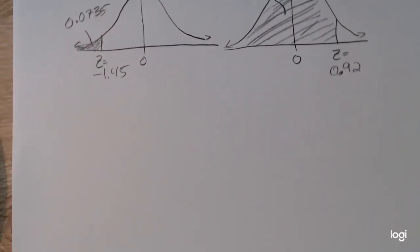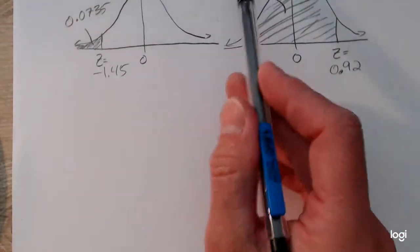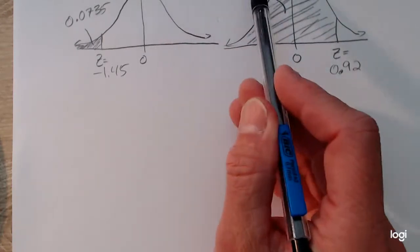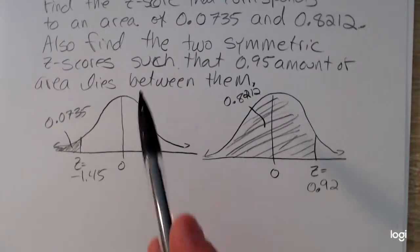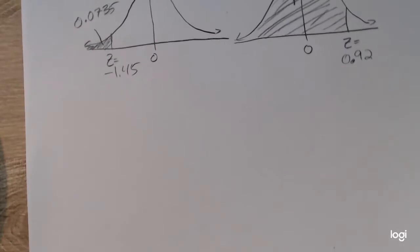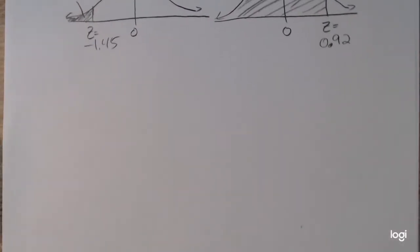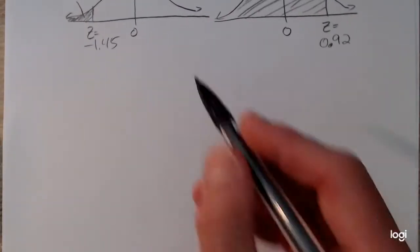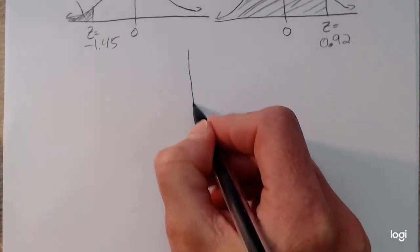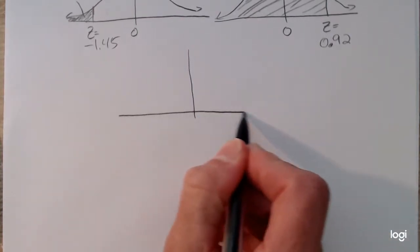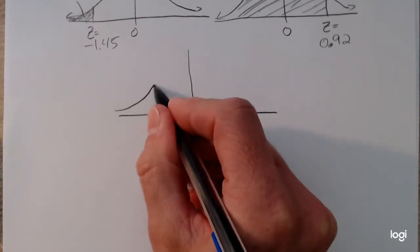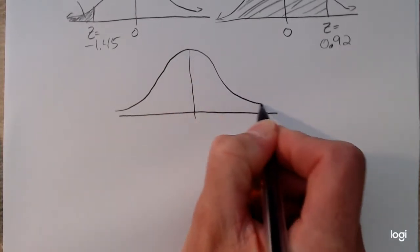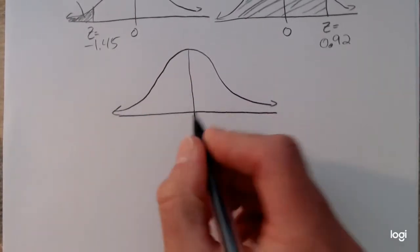Now for this last part, I want to find the two symmetric z-scores such that 0.95 amount of area lies between them. And again, this is a really important example because we will see a lot of this when we get to confidence intervals and hypothesis testing, specifically for a two-tailed hypothesis test.